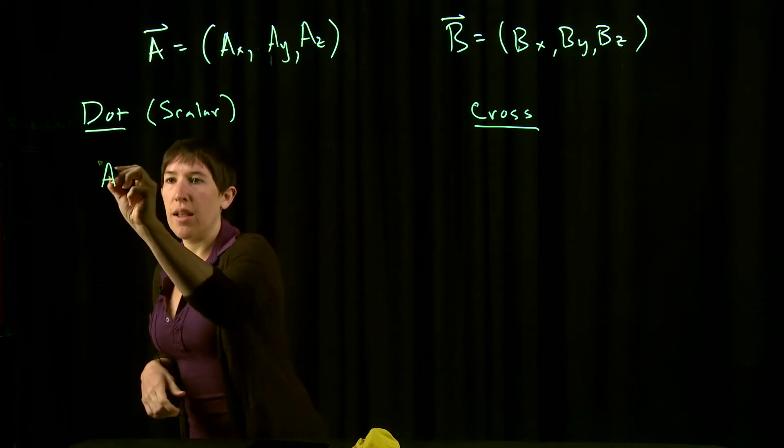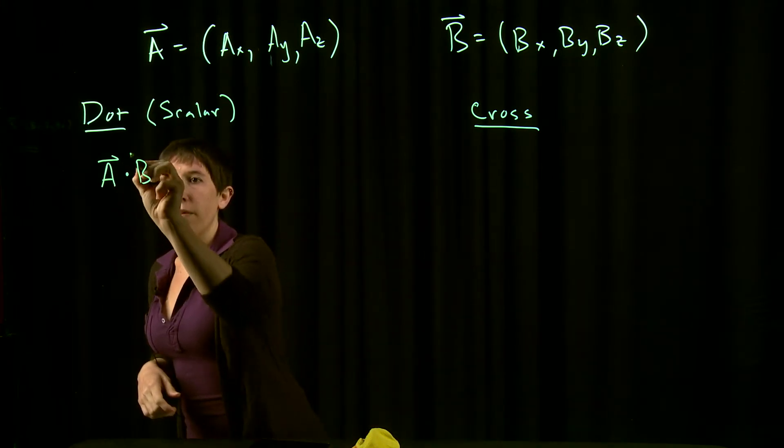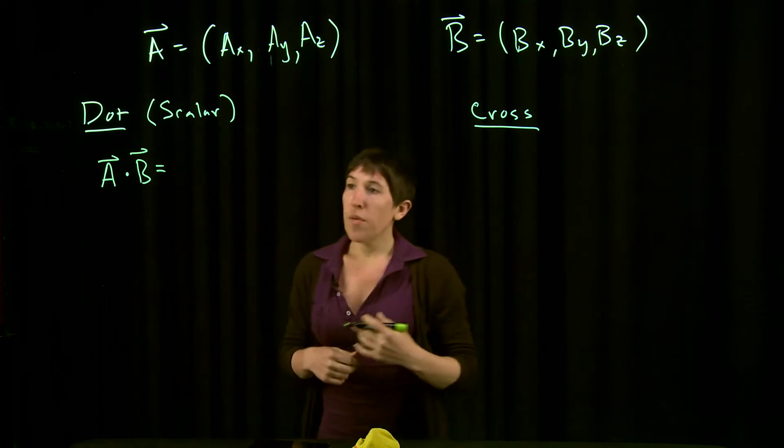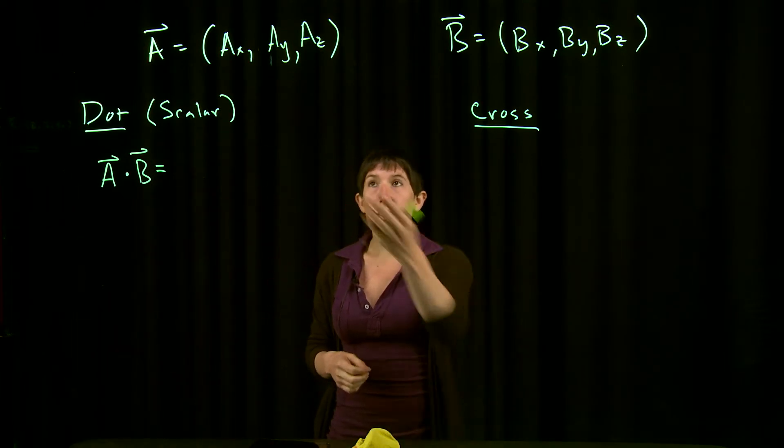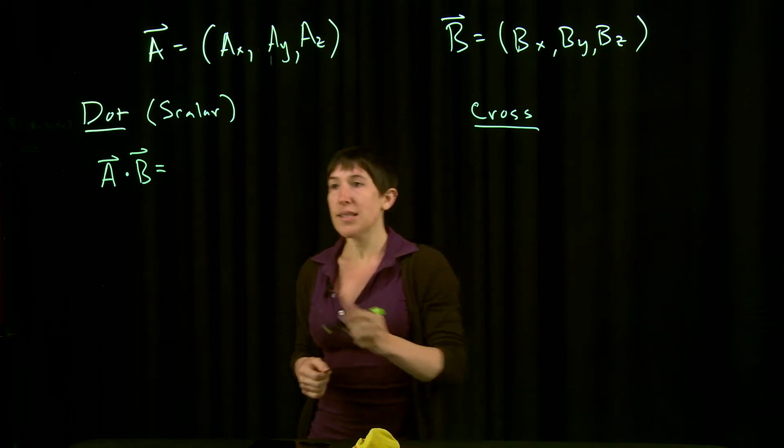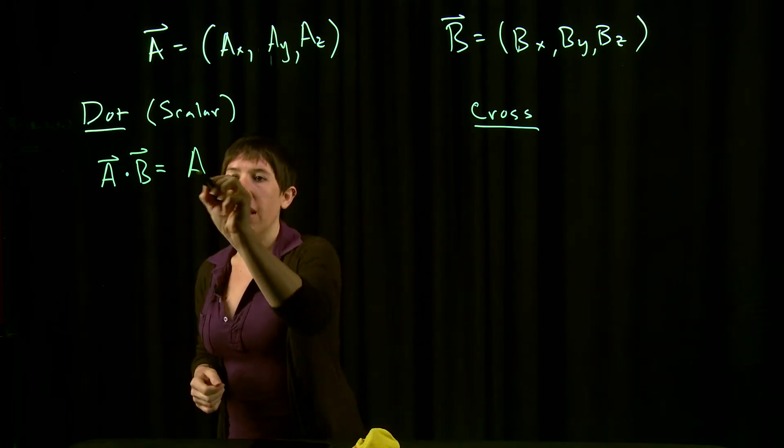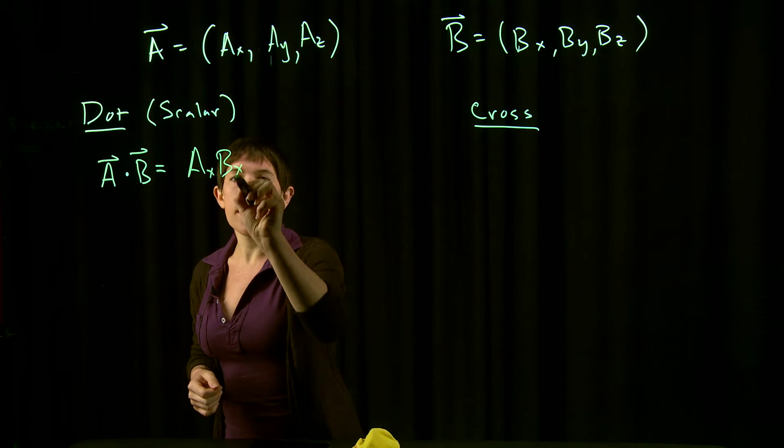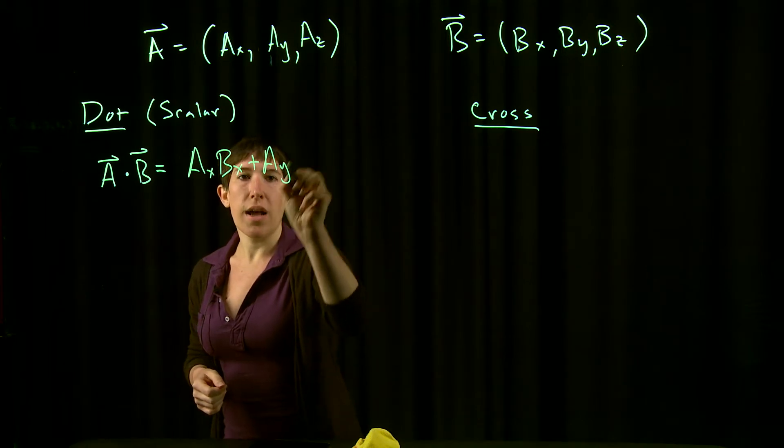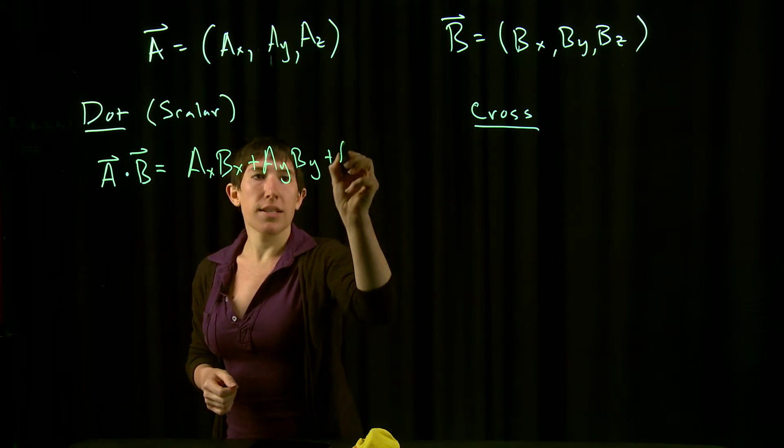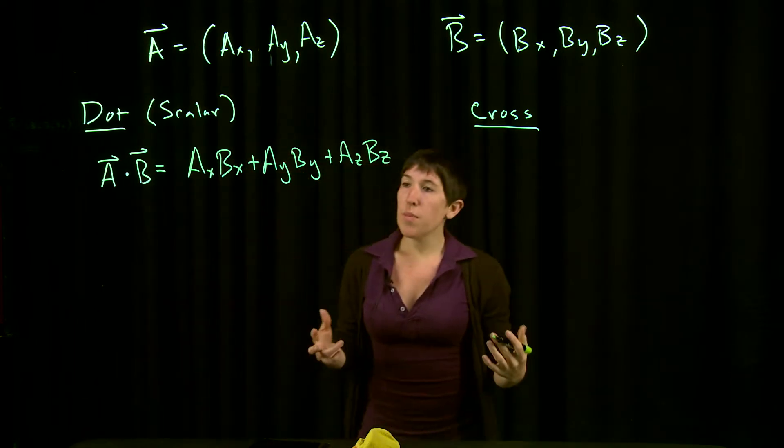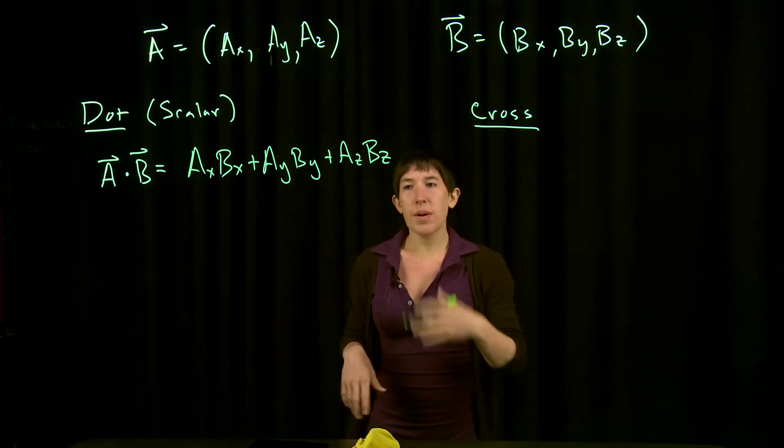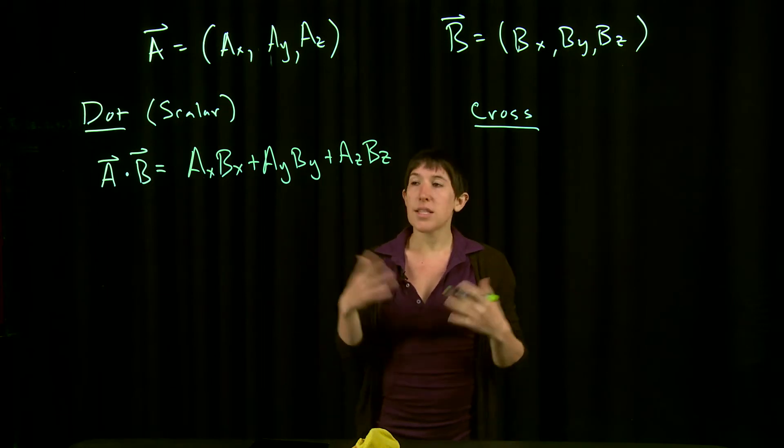A dot B. There are a couple different ways you can compute this. The first is most useful if you're given the components, and this is simply Ax*Bx + Ay*By + Az*Bz. You simply multiply the x component by the x component, y by y, z by z.